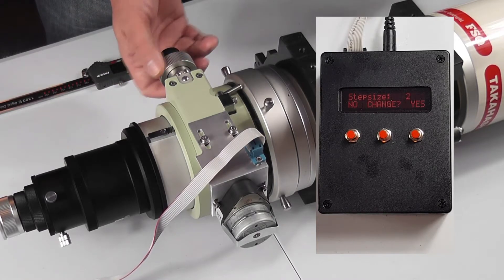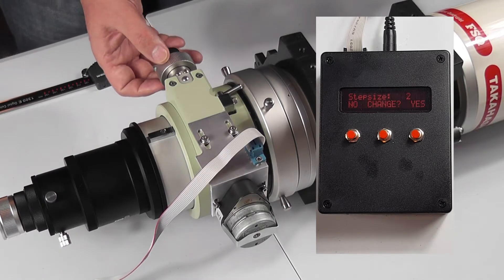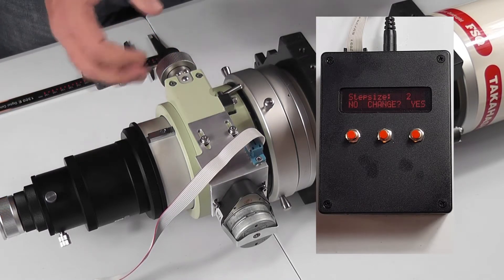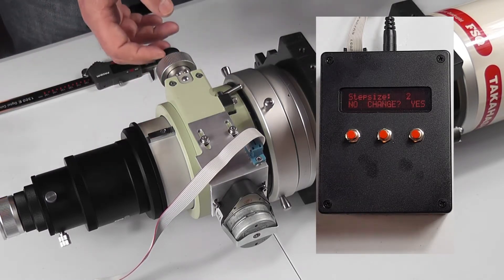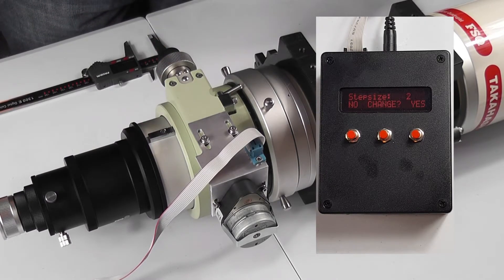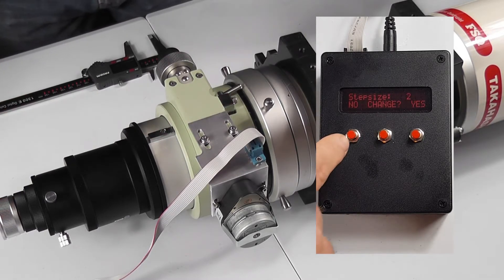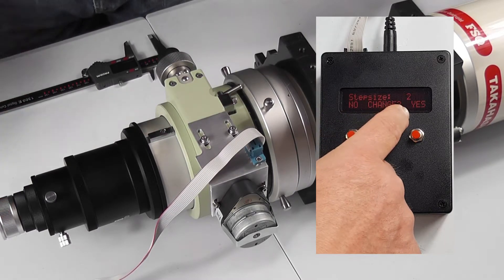So for a focuser that's got six and a half turns—and this is information from Lakeside—a motor focuser that has six and a half turns, that will be 26,000 counts, which is quite high. I mean it's fine, you can run with 26,000 counts, but sometimes it's better to have a number that's a bit more manageable, a bit more rememberable.